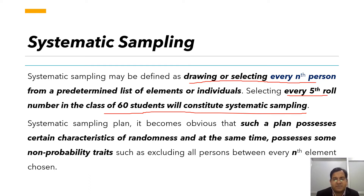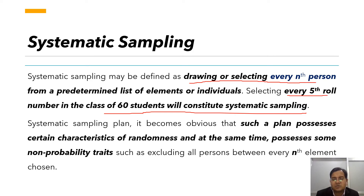This is the method generally used in social surveys. In a household survey, researchers take every fifth or every tenth house. This is the process generally used in a systematic manner. To understand why it is non-probability, you need a clear idea of what probability and non-probability techniques mean.